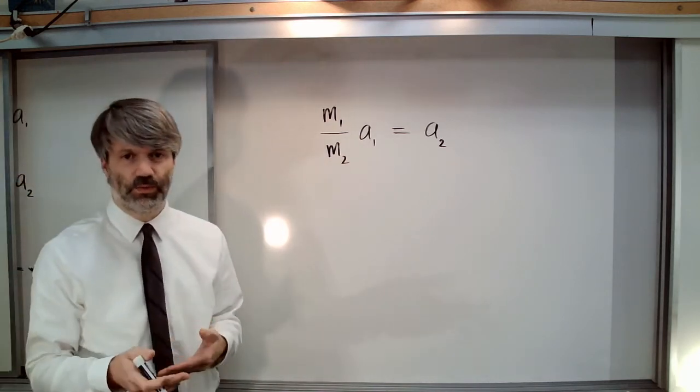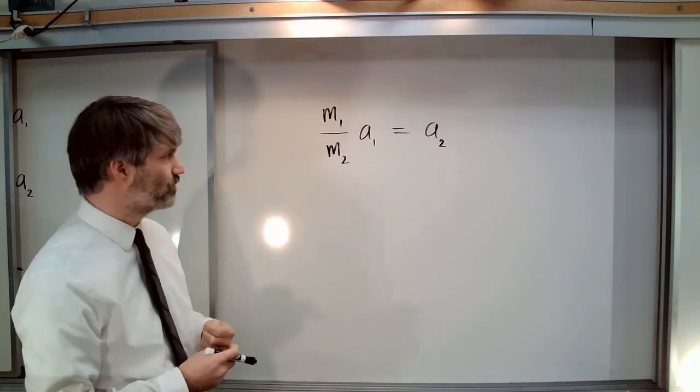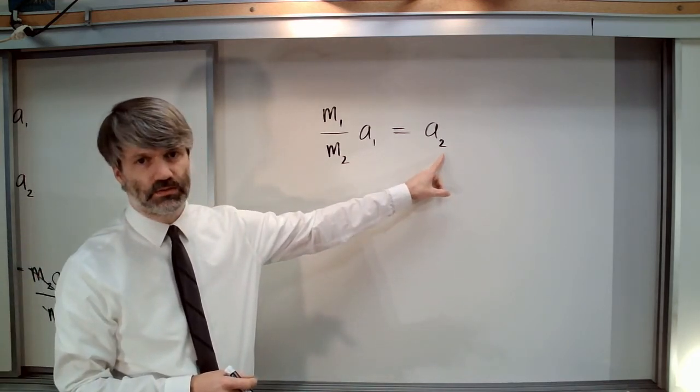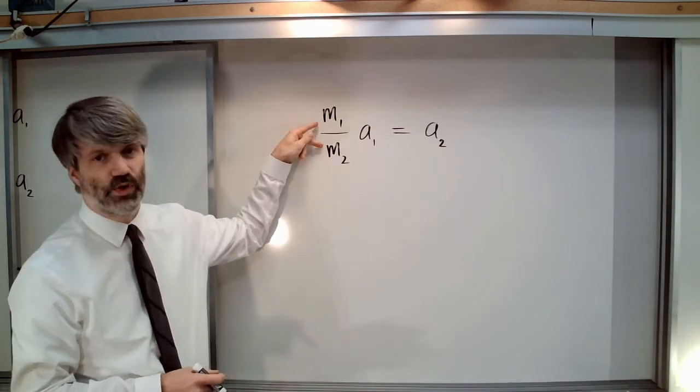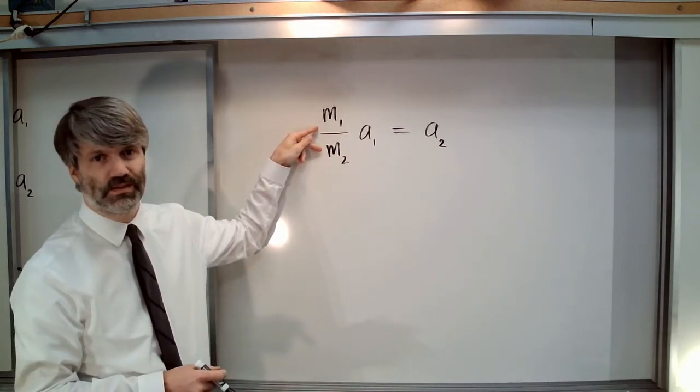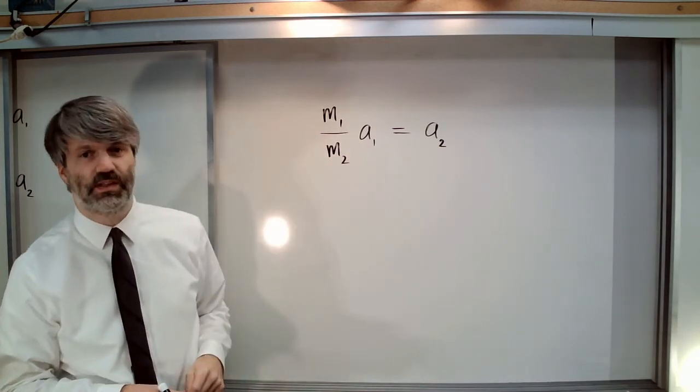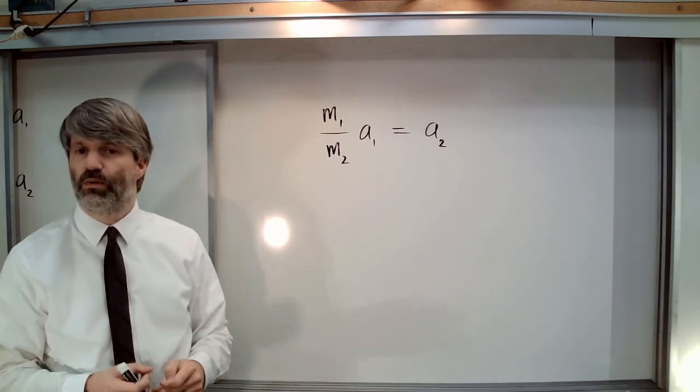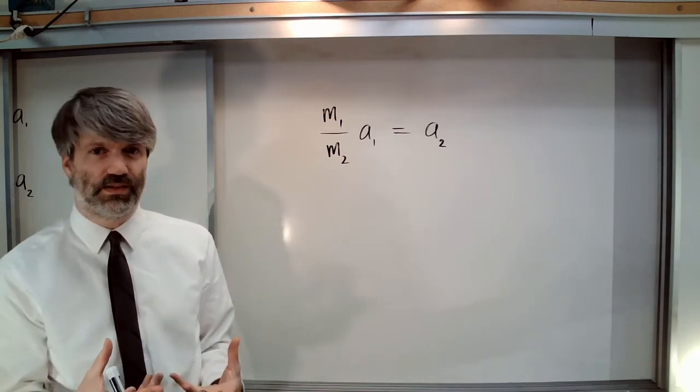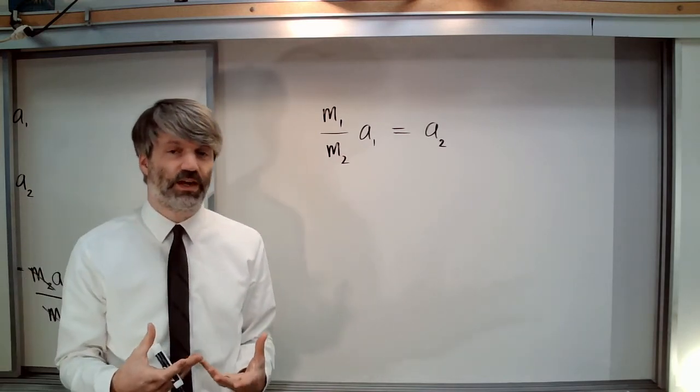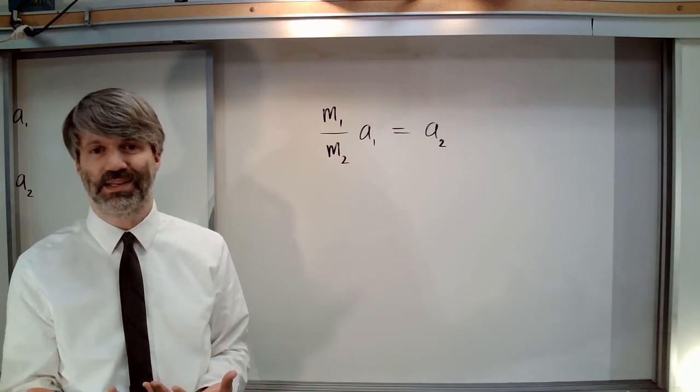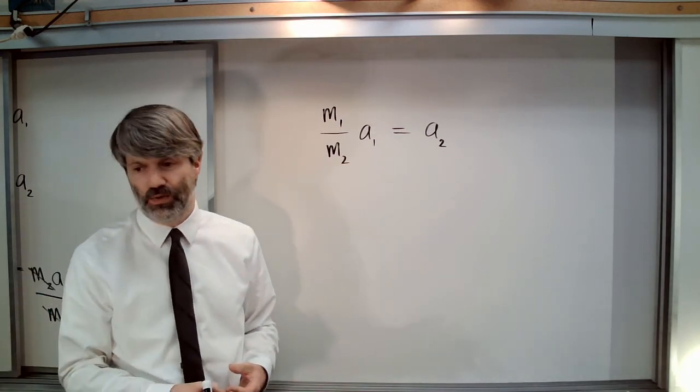Now take a look at what we see from this. The acceleration of the second object is a direct result of the ratio of the masses multiplied by the acceleration of the first. The ratio of the masses is really important. In fact, the ratio of masses ends up being more important than the masses themselves quite frequently.